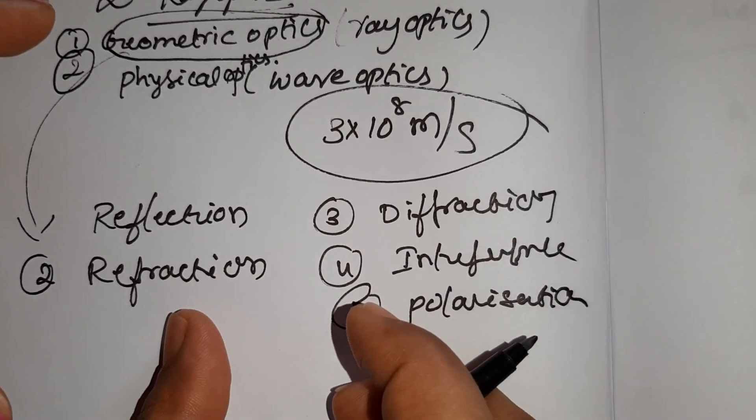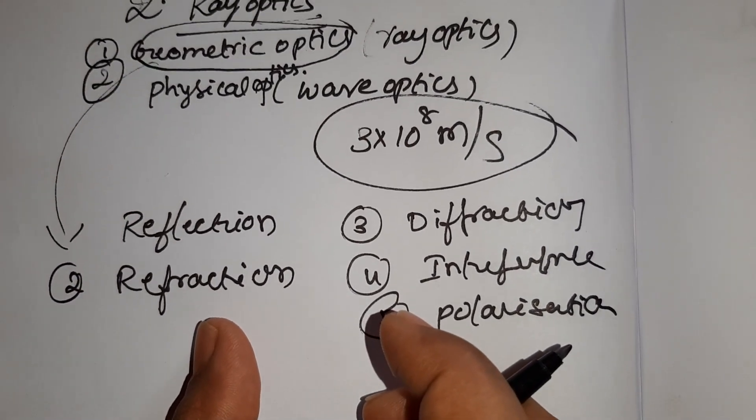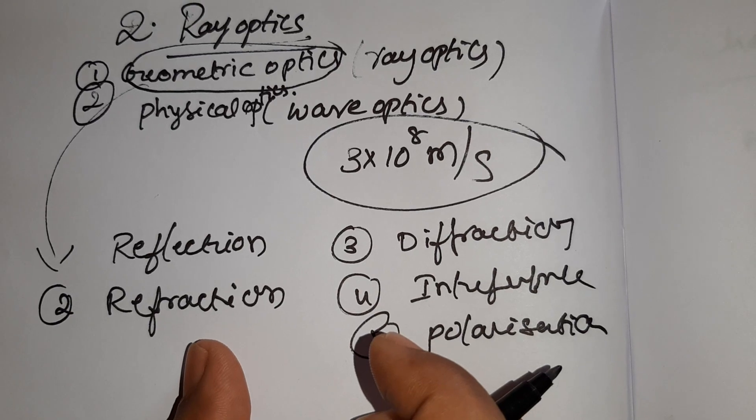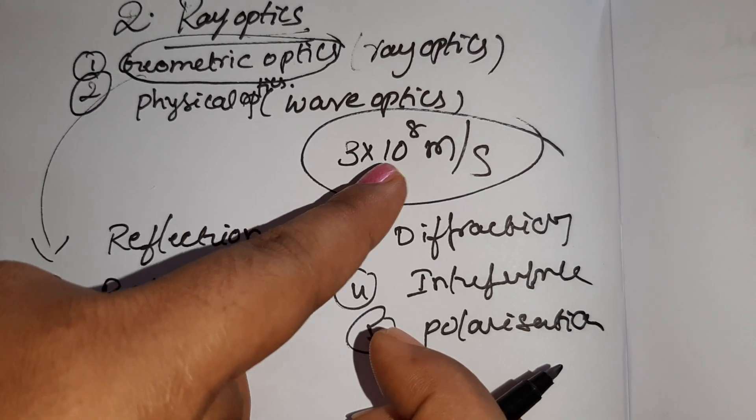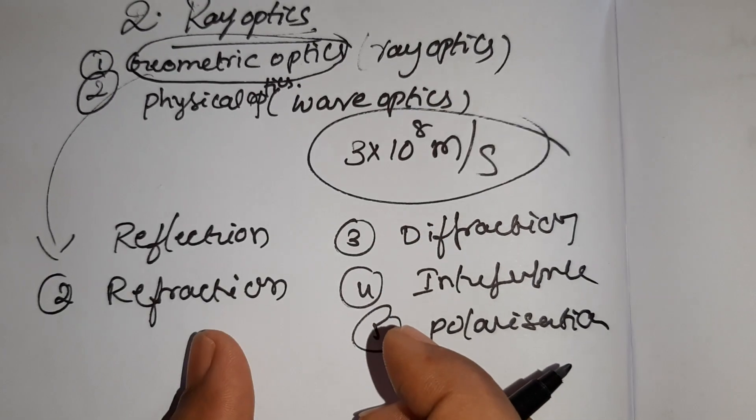Light is an electromagnetic wave. The speed of light is 3 × 10⁸ meters per second.